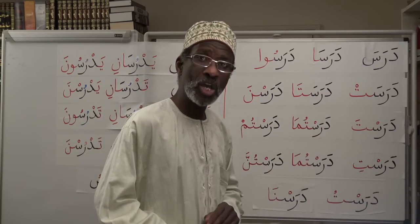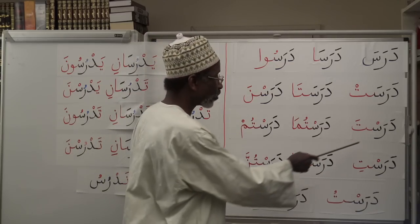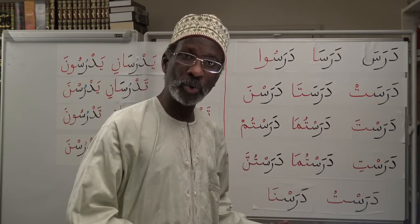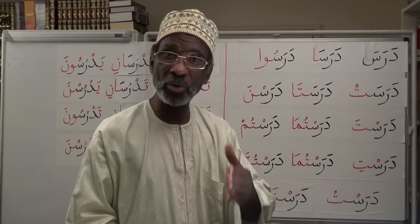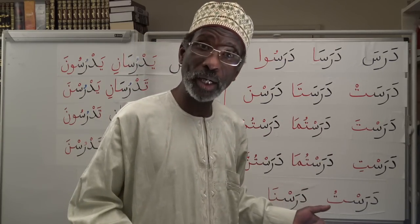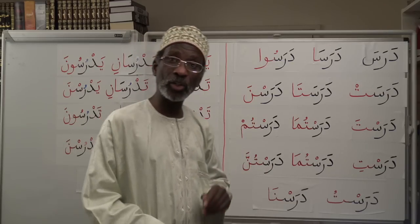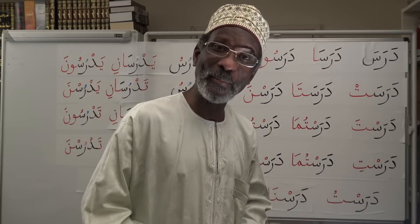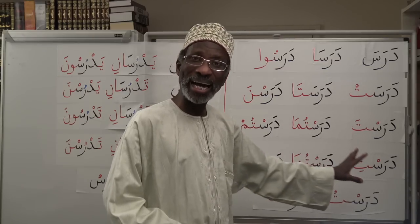Now if you look at this very carefully, the common ground is sukun. All of these six forms carry sukun on the third root letter: Darast, Darast, Darast, Darast, Darast, and Darast. Once you have identified that with any verb — like Jalast — you just attach the pronouns. For the masculine section, learn: ta-tumatum. It's like a tomato! For the feminine section: ti-tumatunna. It's like a tuna. So you have tomato for men and tuna for women. Just remember: put sukun all the way and then add ta-tumatum or ti-tumatunna.